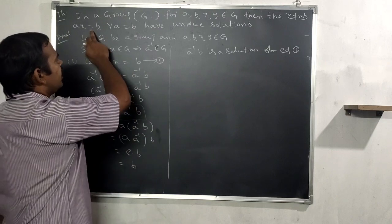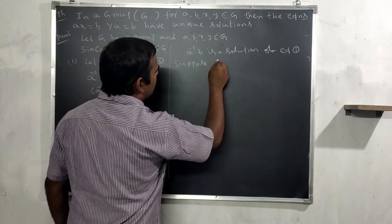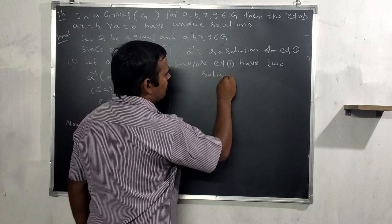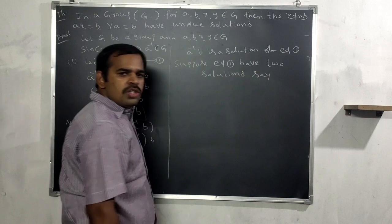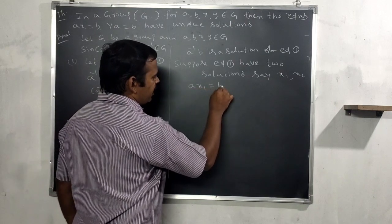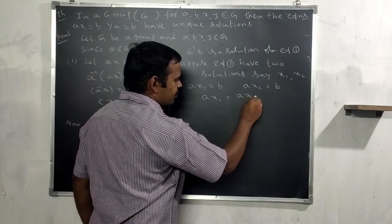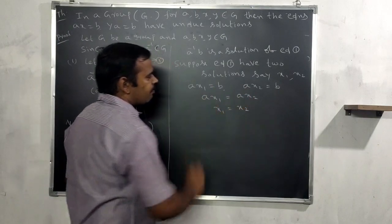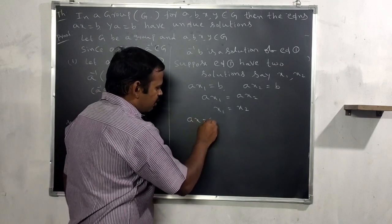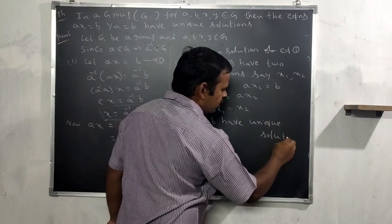To show uniqueness, suppose equation one has two solutions x1 and x2. Then ax1 = b and ax2 = b, so ax1 = ax2. By left cancellation, x1 = x2. Since any two solutions are equal, ax = b has a unique solution.